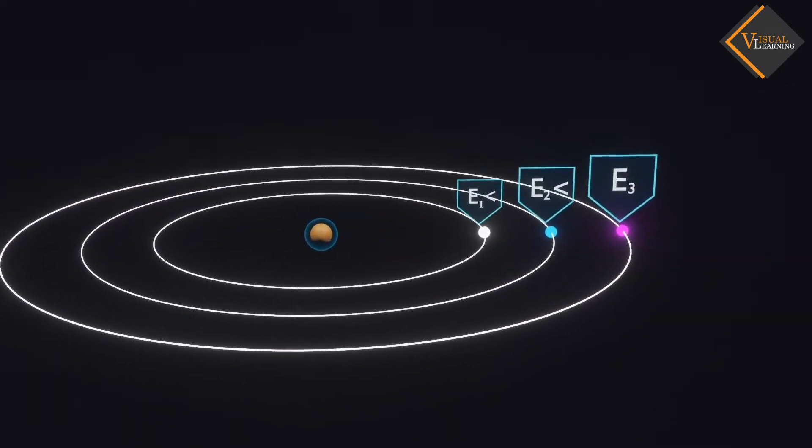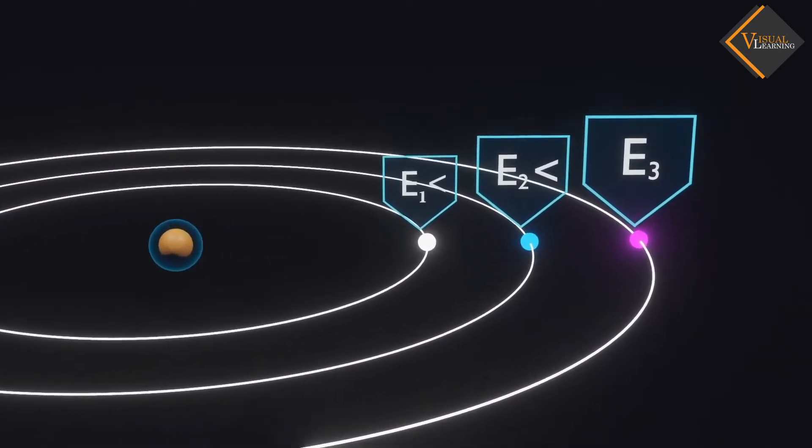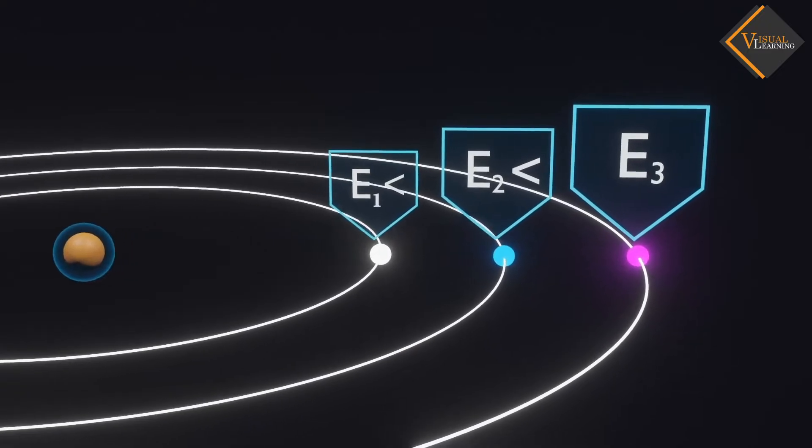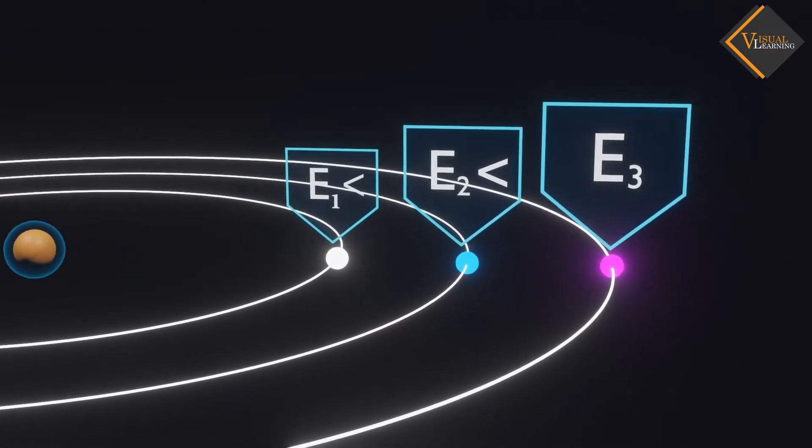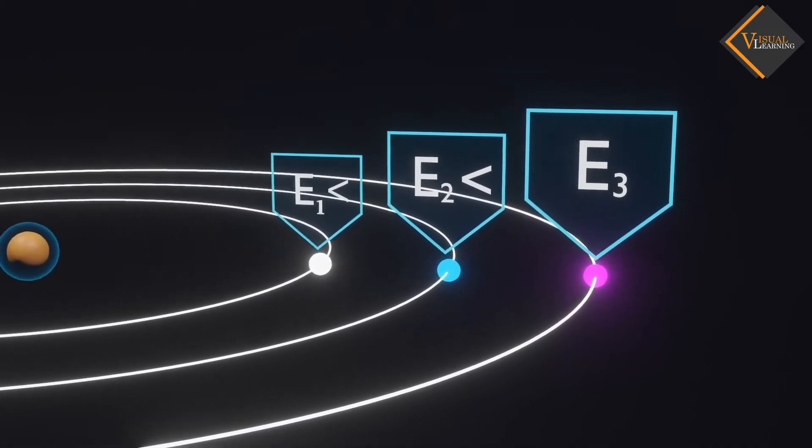Bohr found that an electron located away from the nucleus has more energy, and the electron which is closer to the nucleus has less energy.